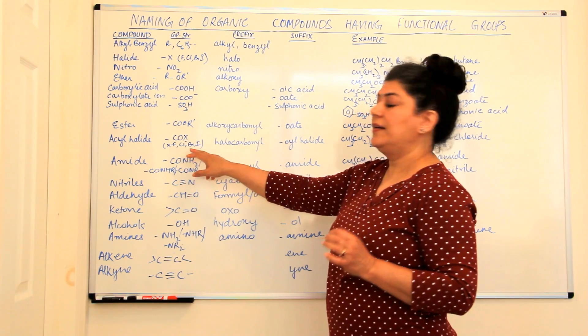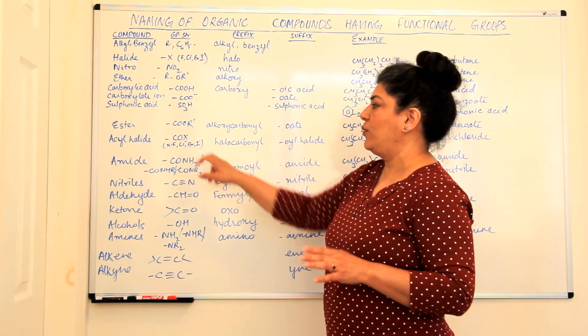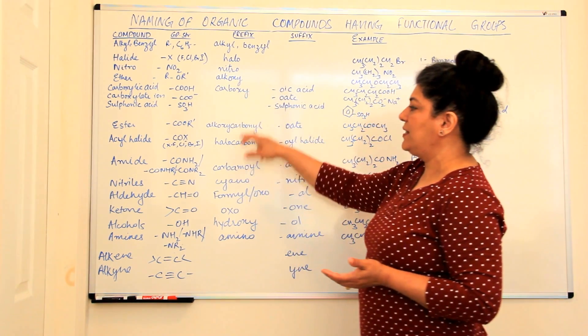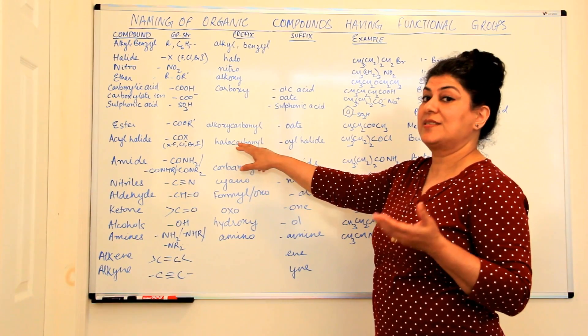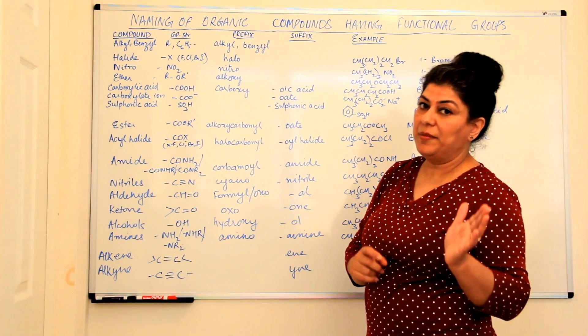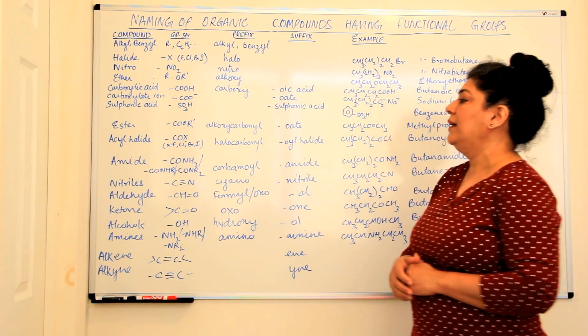Acyl halides are halides with CO to them. So COX, where X would be fluorine, chlorine, bromine or iodine. They are written as a prefix. If it is a prefix, that is, if it is a substituent, it is a halocarbonyl. And if it is the main, that is, the primary functional group, then it is an oyl halide.